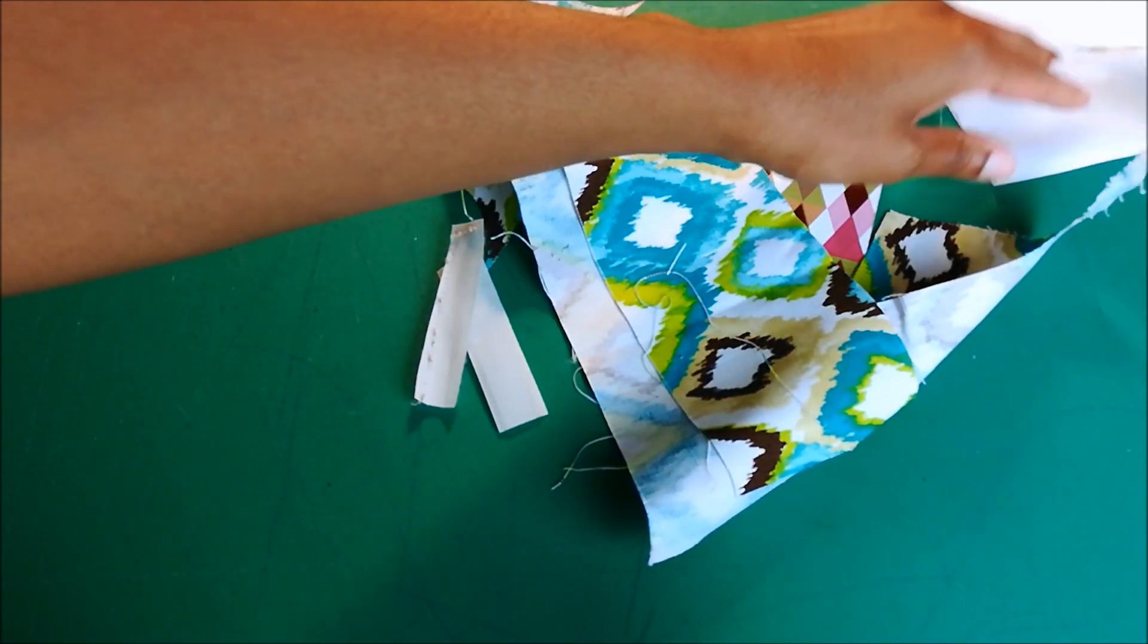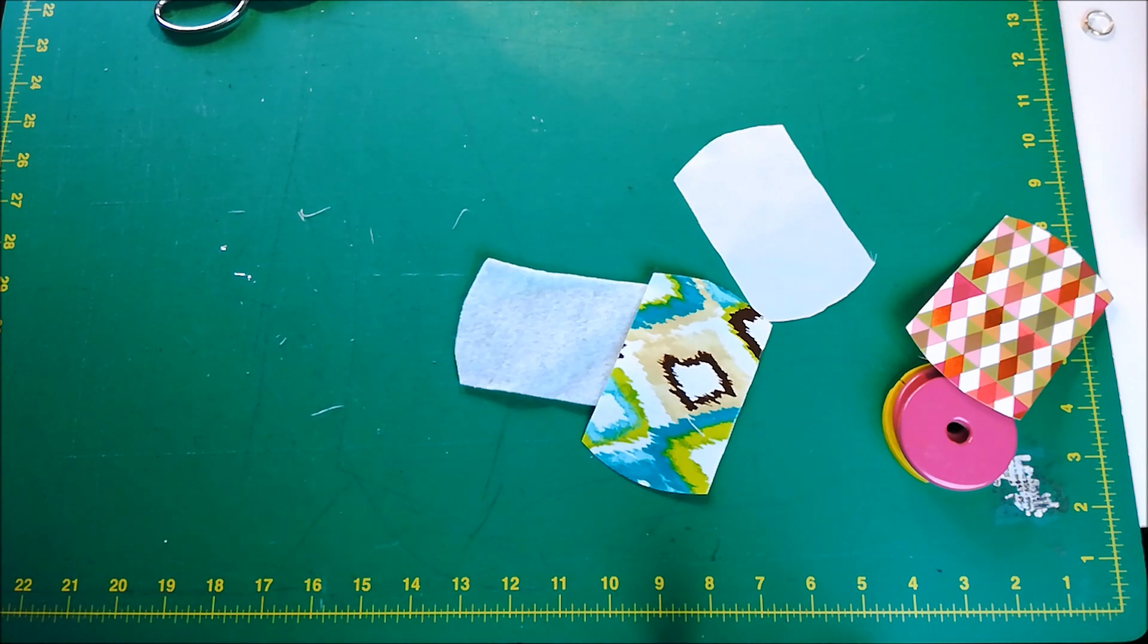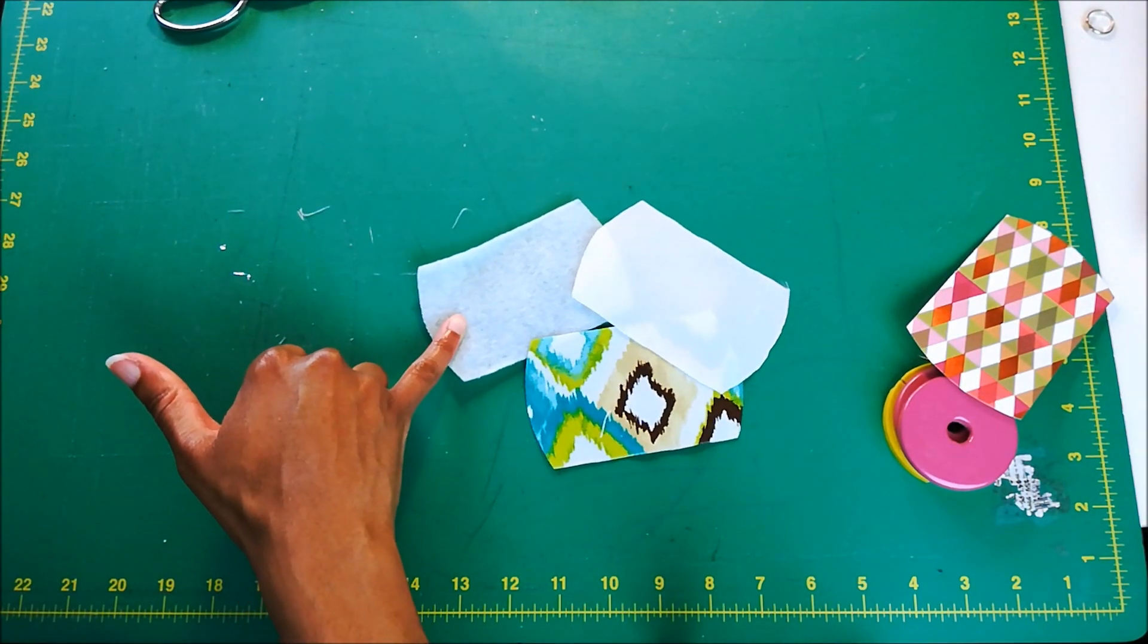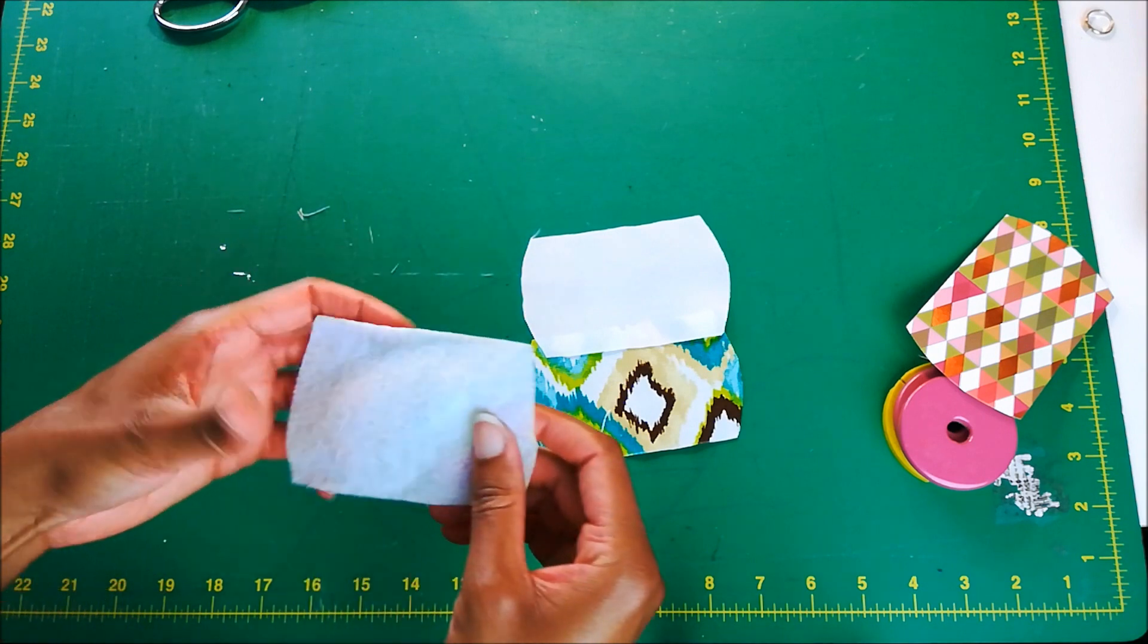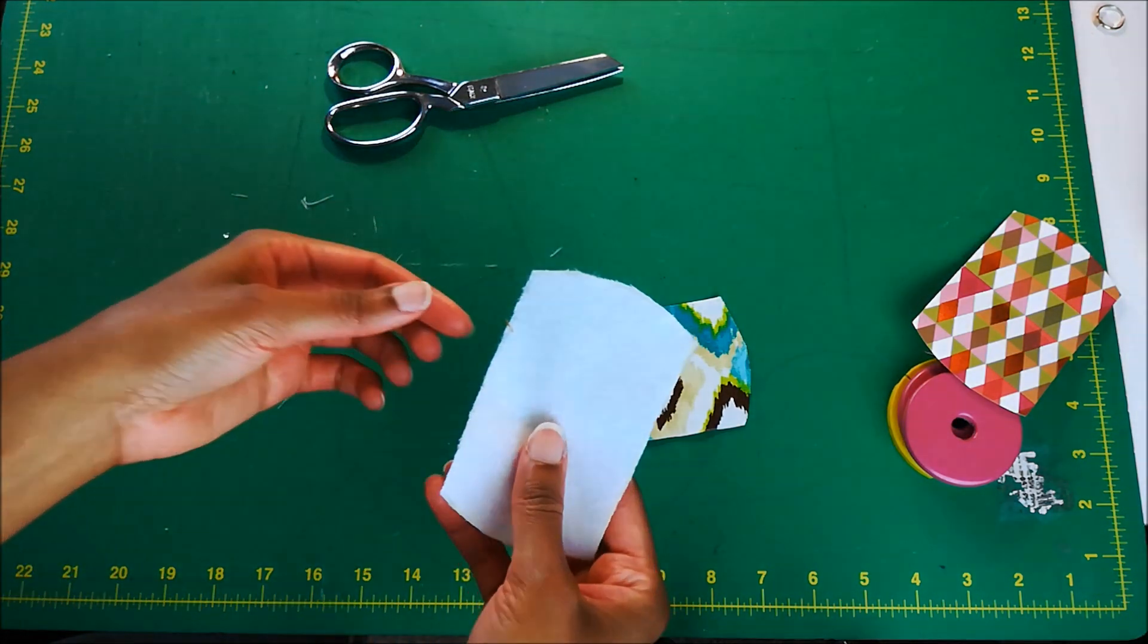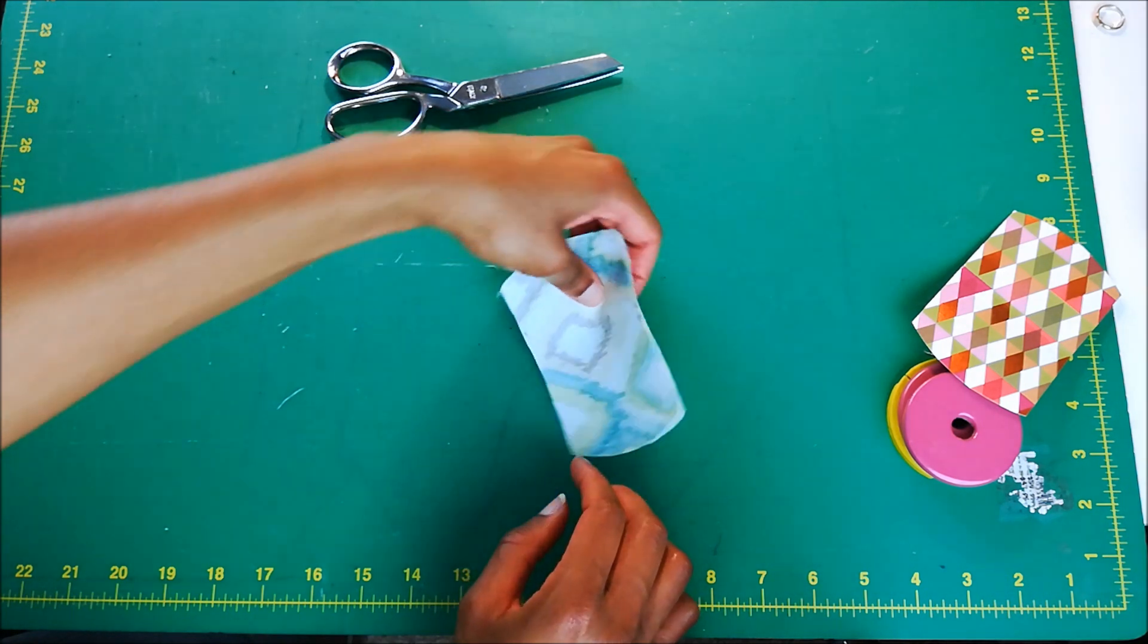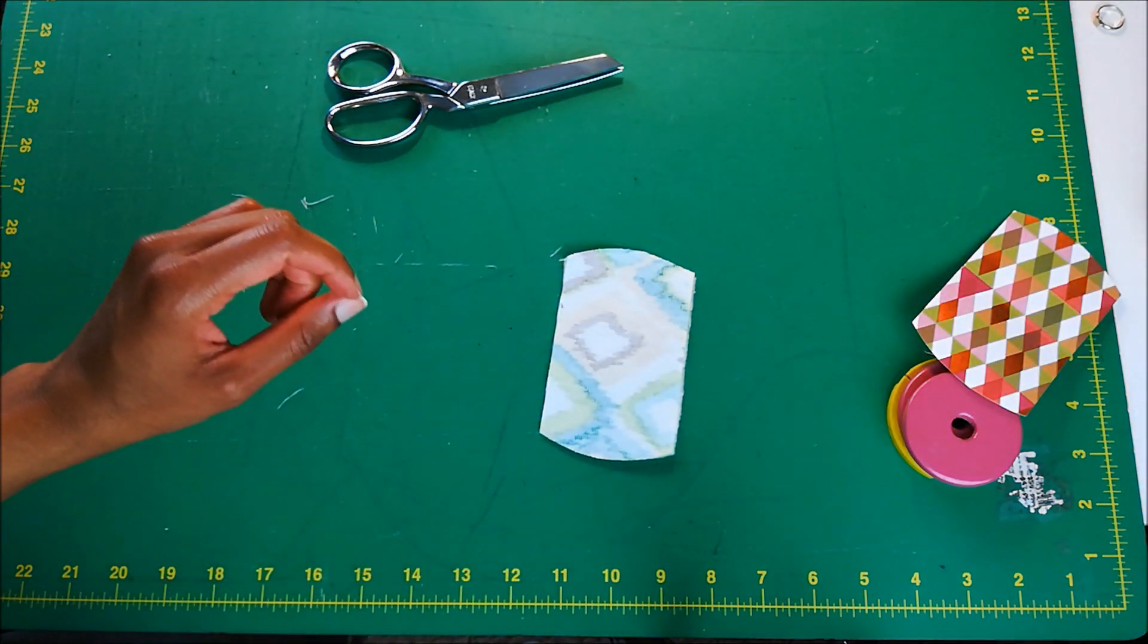All right, so I've got all three pieces cut out. Now I'm going to take my interfacing and my lining to the ironing board and attach the fusible interfacing to the back of my lining. Already, now that my interfacing is attached, I'm going to pin my lining to my shell fabric and leave a small opening, probably about here, so that I can flip it inside out.